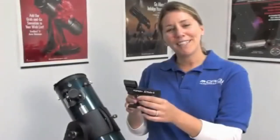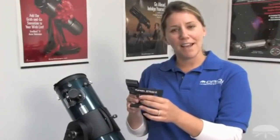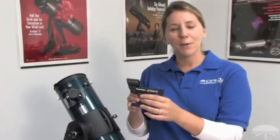This is the Orion Easy Finder 2. It helps you aim your Starblast 4.5 up to the sky for viewing. We're now going to attach the Orion Easy Finder to the telescope.